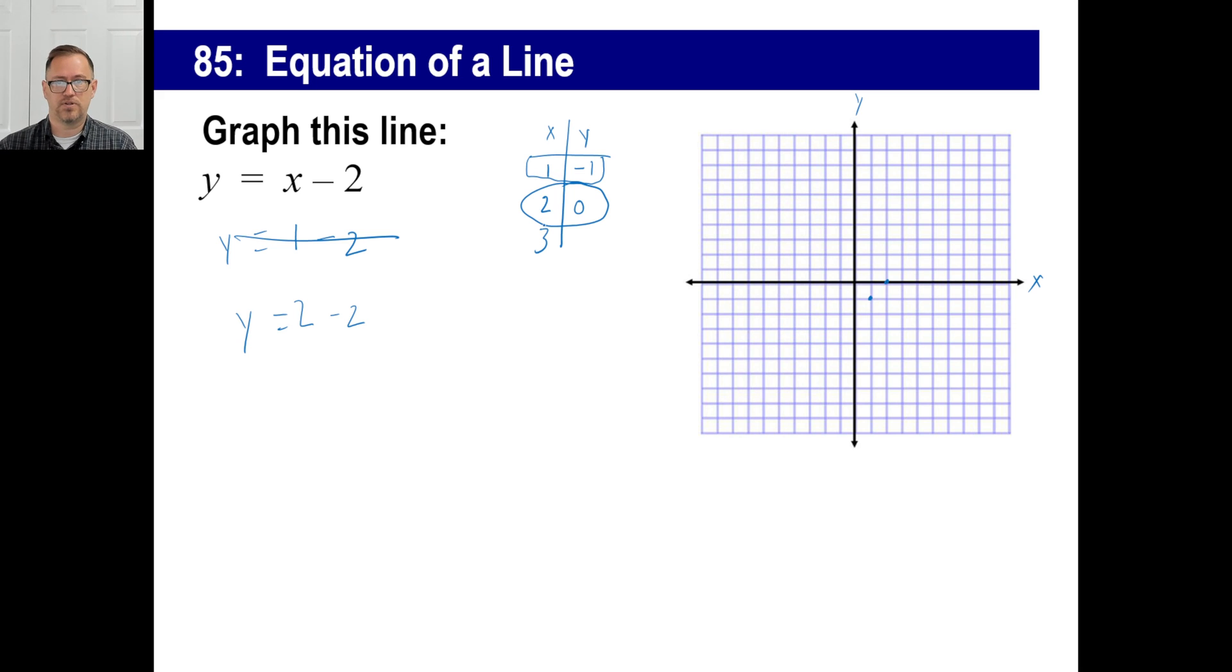Let's just check it. So we've graphed these two points already. One, negative one, two, and zero. Let's do, our X is equal to three. Well, let's do it. Y equals X is three, three minus two. Three minus two, of course, is one. So if X is three, then Y is one. There we go. Hey, that proves we're right. So there is our line.